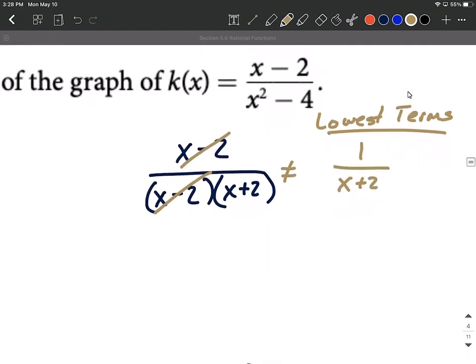All right, so the domain, you can't plug in either positive 2 for this factor or a negative 2 for this other factor, but let's identify which one's going to be a vertical asymptote, which one's going to be a removable discontinuity. So first of all, our vertical asymptotes.